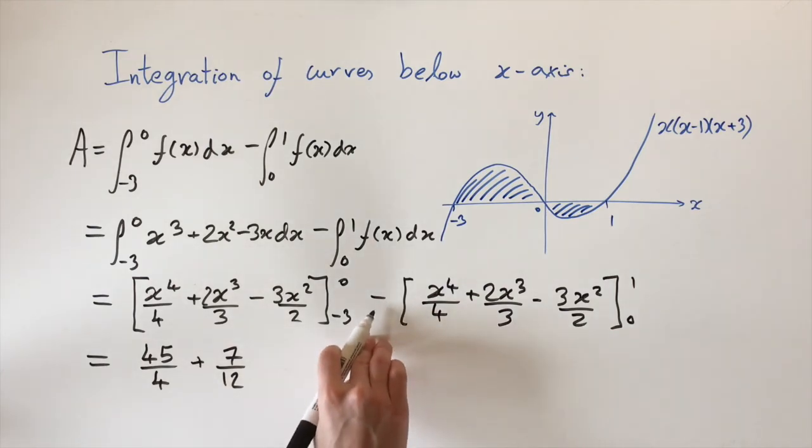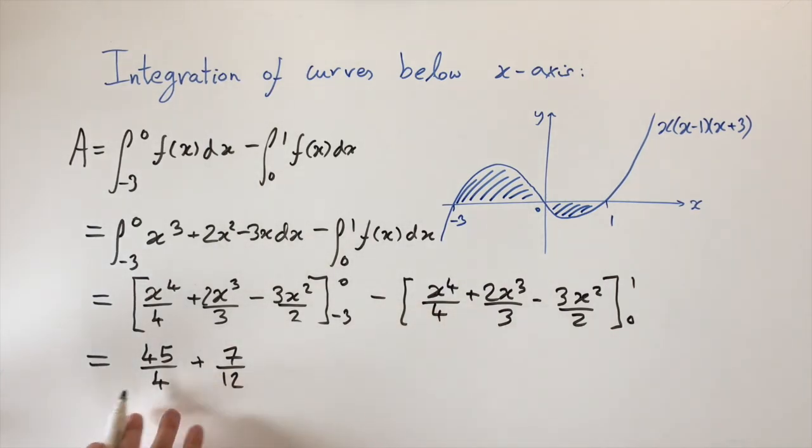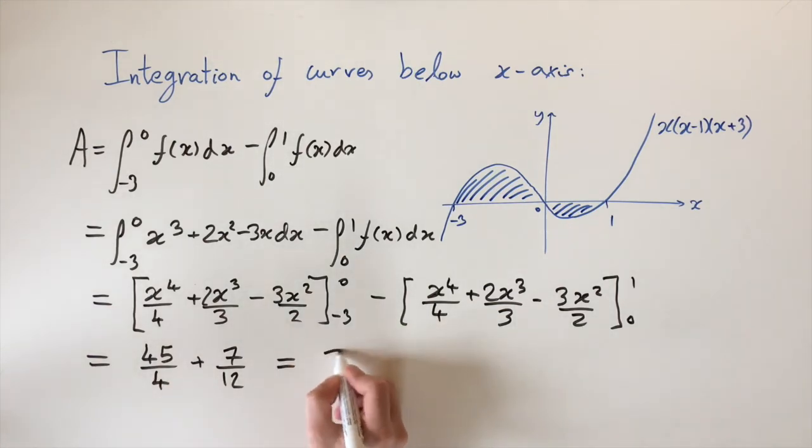And so we have the sum of these two positive numbers, and this gives us the total area, which comes out to be 71.6. So this is the area we are after.